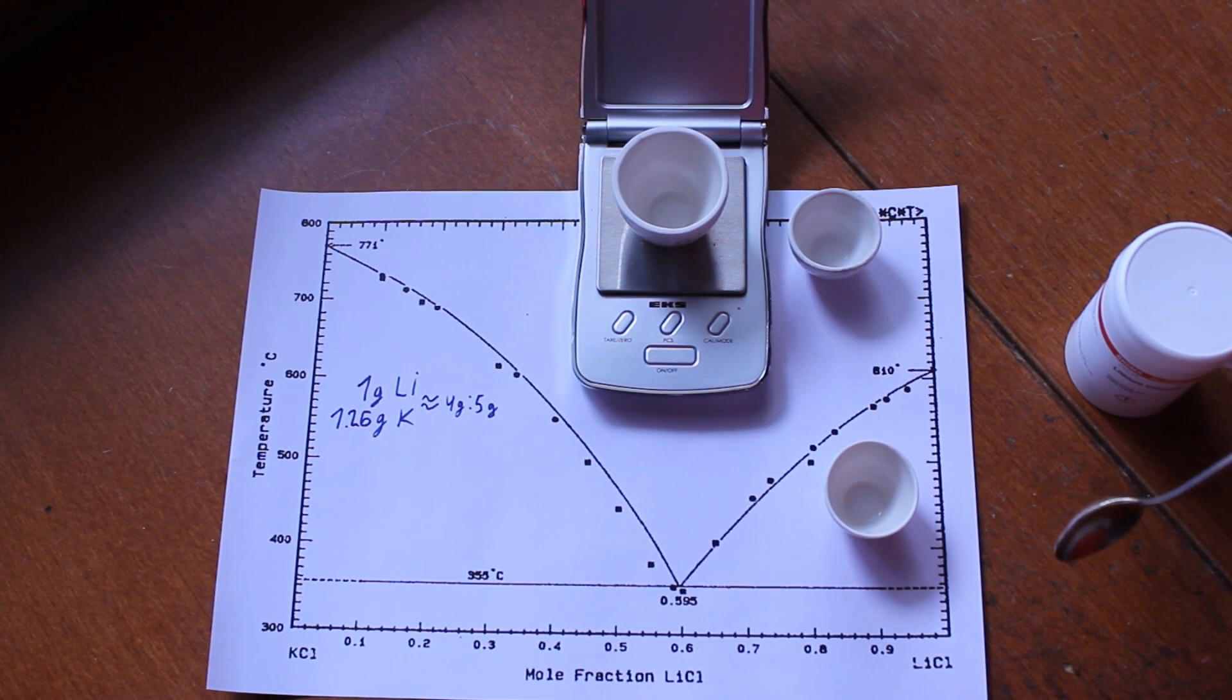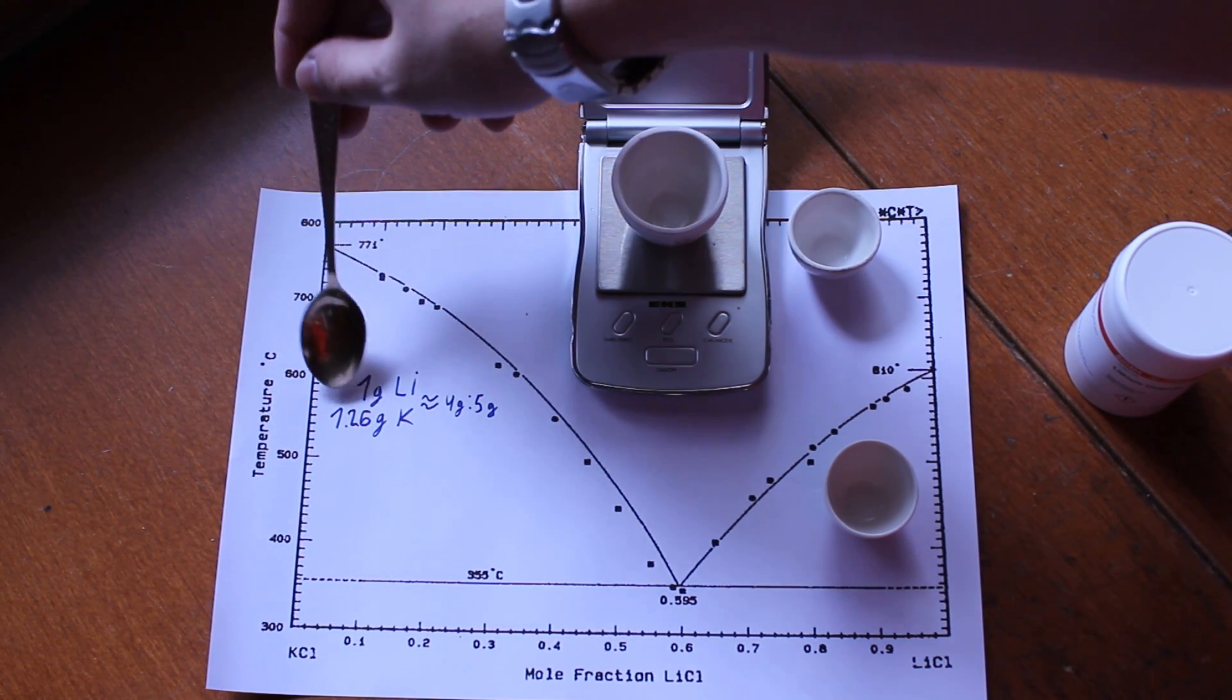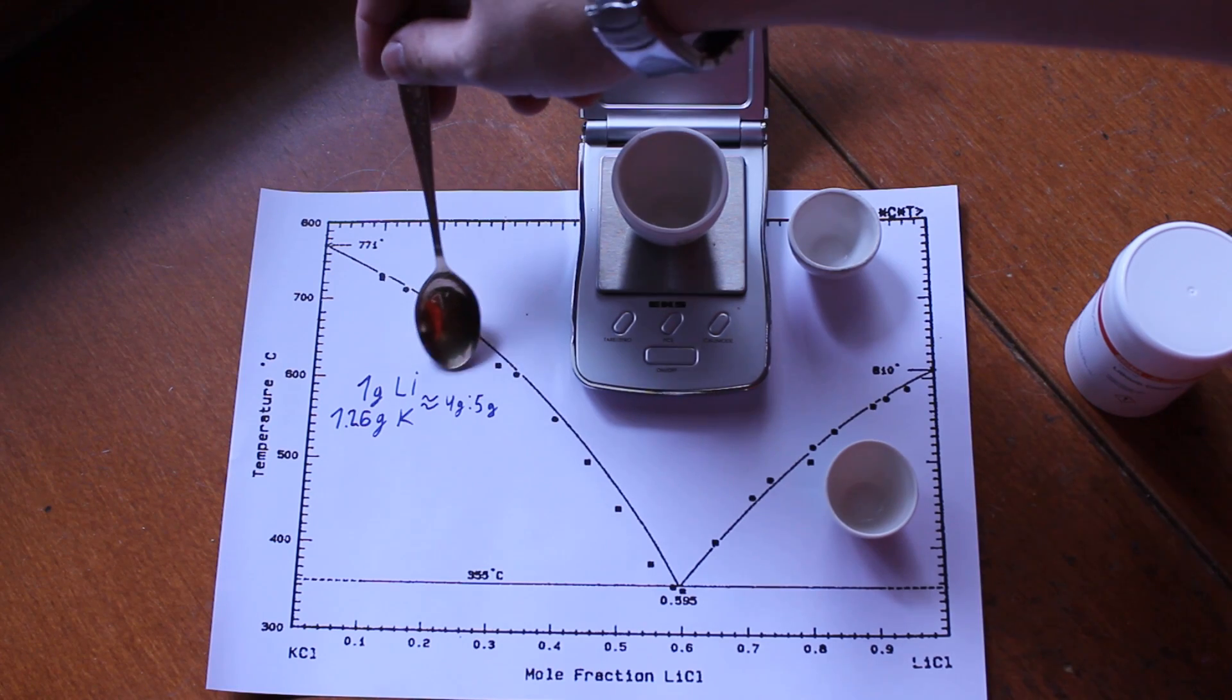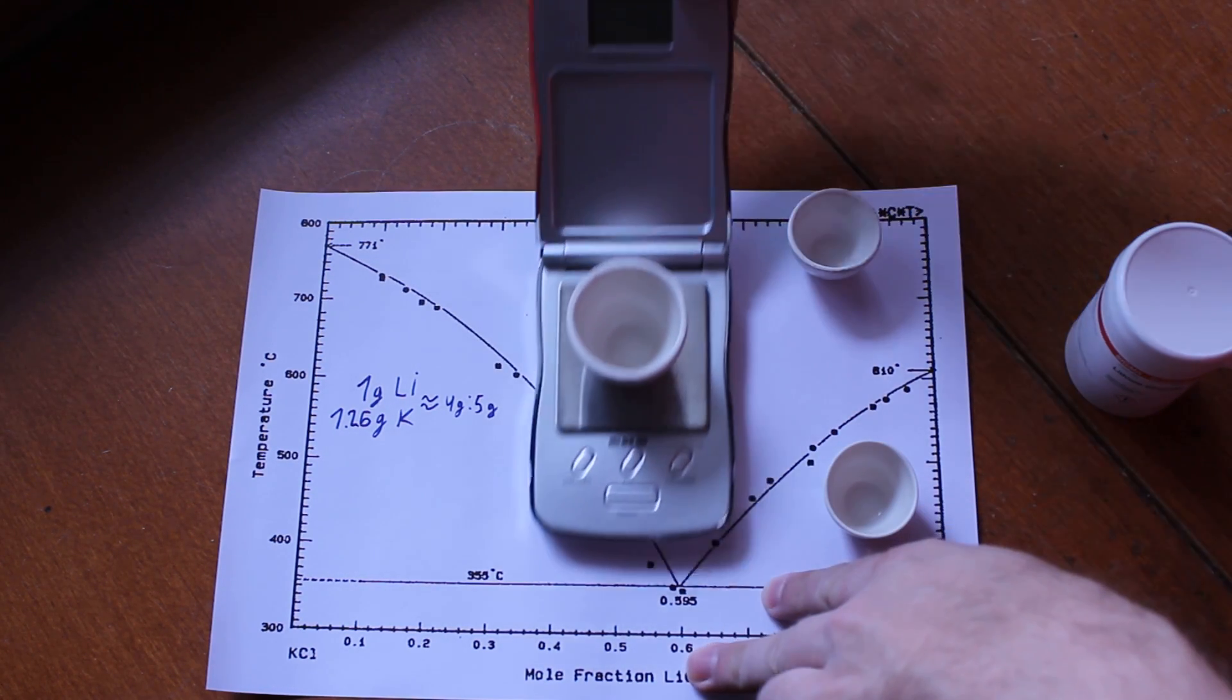In terms of weight, that means for every gram of lithium, you need 1.26 grams of potassium, 350 to 40, or a 4 to 5 gram ratio, which is what we are going to weigh out now.